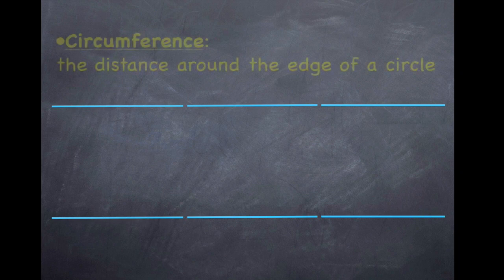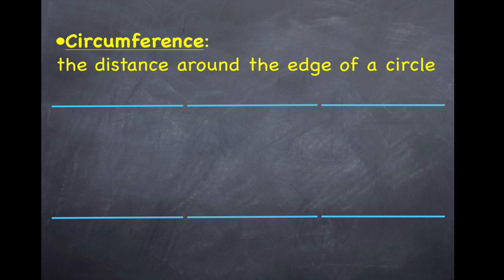Let's start with circumference. This is the distance around the edge of the circle. This is the circle part. It's what you might think of as the perimeter.